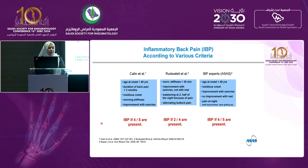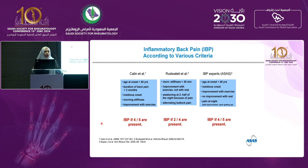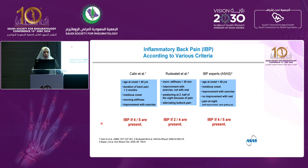The features of inflammatory back pain are listed in criteria that have changed over the years. The latest criteria, provided by the society dealing with ankylosing spondylitis, requires the presence of four out of the clinical features to say that inflammatory back pain is present. Using these features, you can increase the probability of diagnosing axial spondyloarthritis by threefold in the primary healthcare setting.